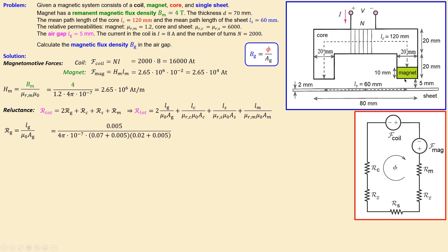The gap length is 0.005 m (5 millimeters), and the nominal cross-sectional area is 0.07 × 0.02 m (70 mm by 20 mm). Fringing increases the effective gap area by adding the gap length to each dimension. Calculating this gives a single gap reluctance of 2.12 × 10⁶ A/Wb.